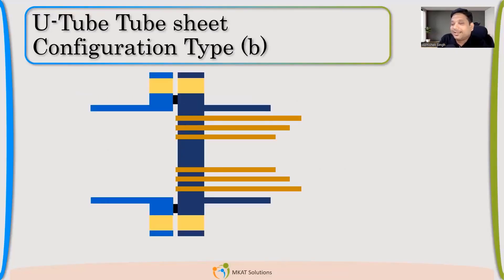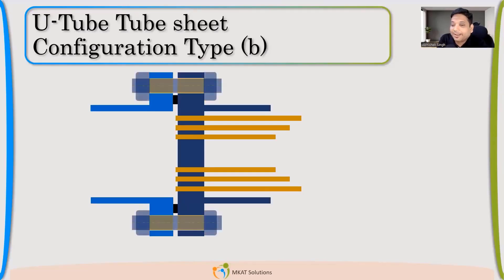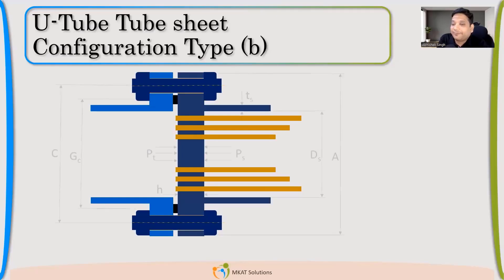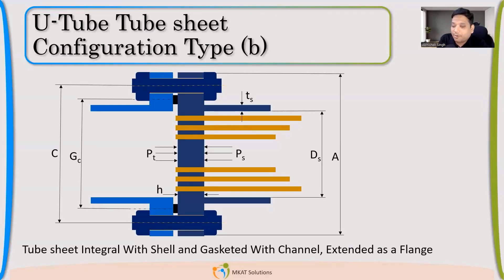What do you think Configuration B will be? If Configuration A is both sides welded, what can be the second variation? One side welded. So it can be one side welded — maybe the channel side or the shell side. So if B is the shell side, then C might be the channel side. So Configuration B is a tube sheet integral with shell. We bolt it and our configuration is ready.